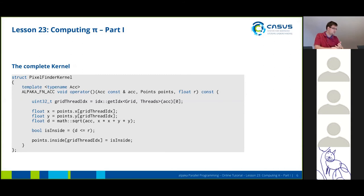The complete kernel looks like this. First we obtain our grid thread index because we don't need to communicate inside the block just yet. We then obtain our indices from the input buffers. We compute the distance using APAKA's math square root function. We determine if the point is inside the circle or not, and we write this result back to the output buffer.